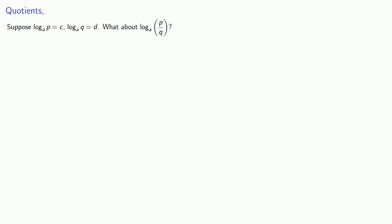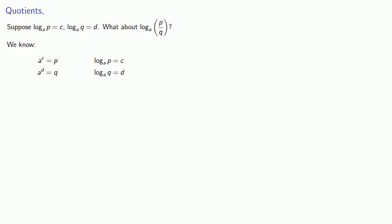How about quotients? Suppose log base a of p is c and log base a of q is d. What about the log of the quotient p over q? Definitions are the whole of mathematics — all else is commentary. We rewrite in exponential form. Since we want to know something about the quotient p over q, and we know how to divide exponential expressions, we can simplify. The log is the exponent, so log base a of p over q is the exponent c minus d.